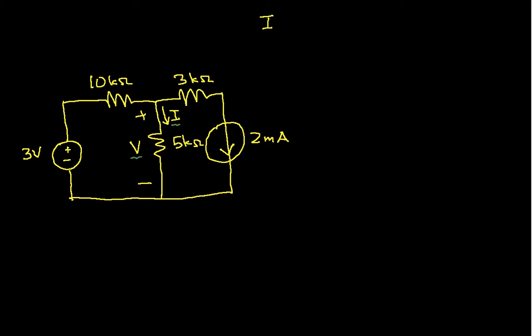The first thing that I will do is apply Kirchhoff's current law to this node right here. And in order to do that, I will define a current that goes through this 10k ohm resistor and I'll call it I1. Now, if I look at this, I have I1 going into the node and that is equal to I, which is the current leaving the node, plus 2 milliamps.